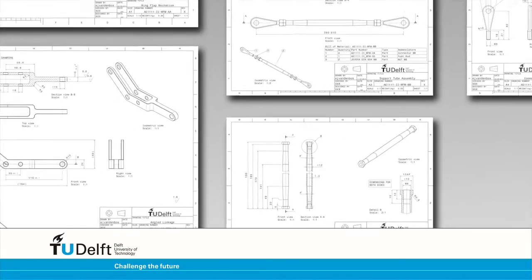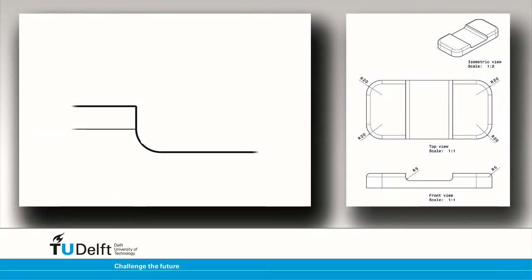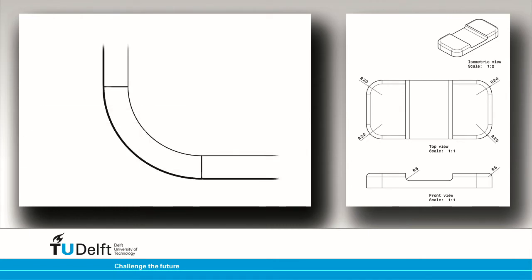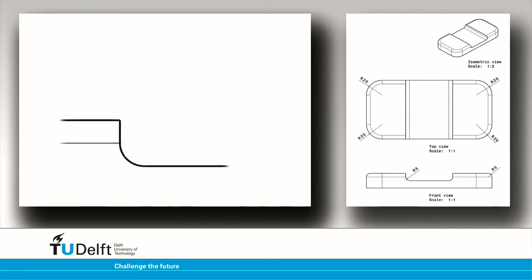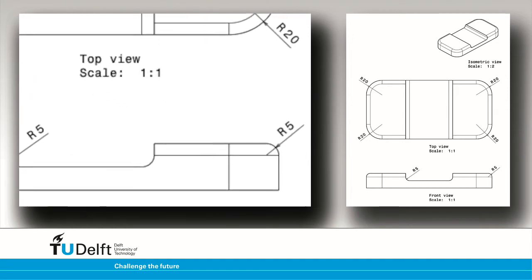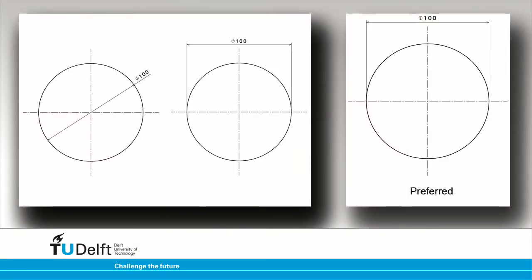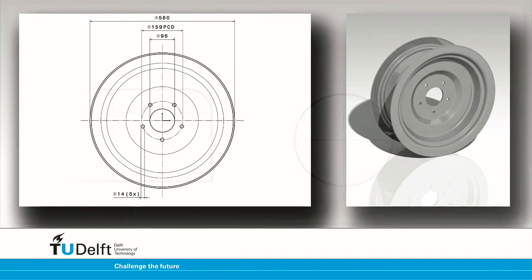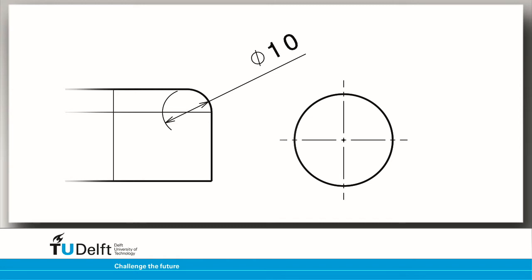Dimensioning common features: Radii are dimensioned using a dimension line with a single arrowhead. The dimension is preceded by the letter R. Radius dimension lines should pass through, or be in line with, arc centres. If a convex radius is dimensioned, the arrow points towards the centre while the dimension line is present at the outside of the arc. If a concave radius is dimensioned, the dimension line passes through the arc centre. You will see the dimension line being extended to the arc centre when using the software to create radius dimensions, but other applications may end the dimension line at the arc. Circles are dimensioned with the dimension preceded by the diameter symbol — a circle with a slanted line through it. Only full circles should be dimensioned like this. Do not dimension radii like circles, and do not dimension circles like radii.